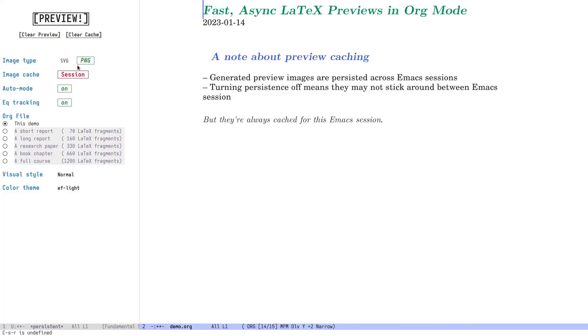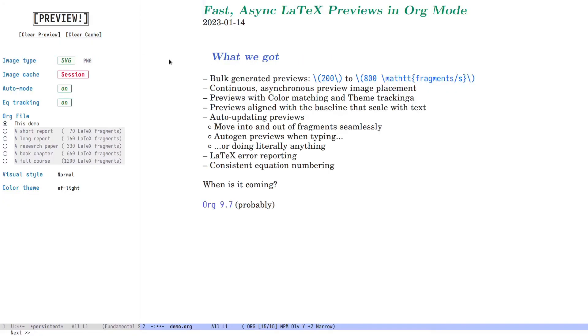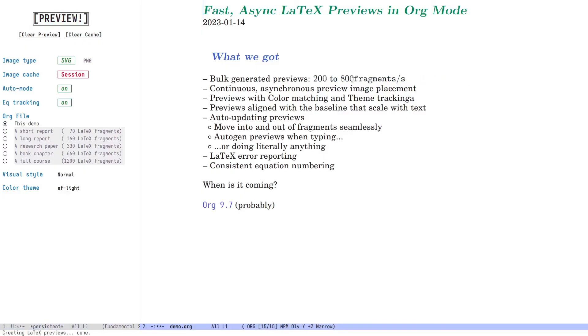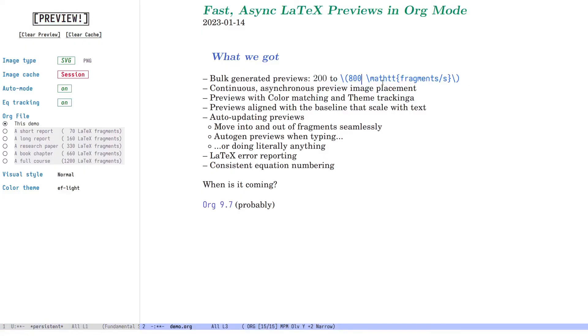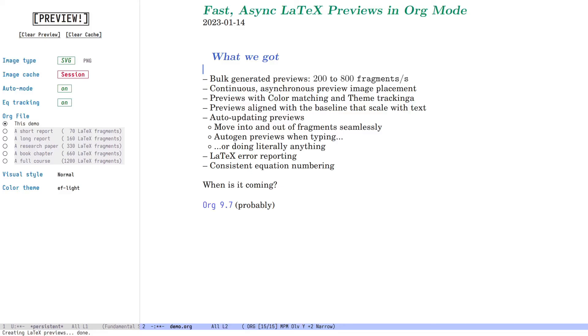So that's a summary of the new LaTeX preview system for Org. It's actually usable now. It's speedy, it's asynchronous with plenty of visual and quality of life improvements on top. So when is it coming out? Sometime this year, hopefully as part of Org 9.7.